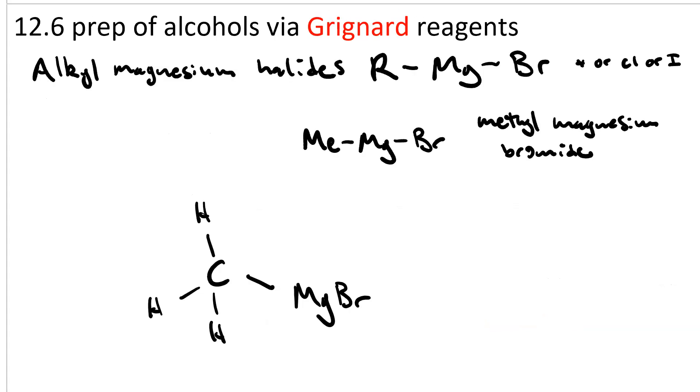There's two ways you can look at this. One is with a covalent bond between the carbon and the magnesium. It's actually a very polar covalent bond, so much so that you could also look at it as being ionic.